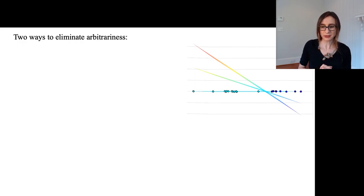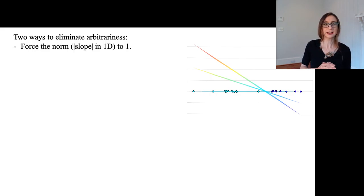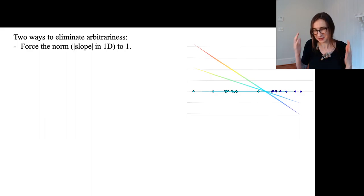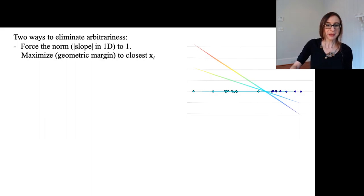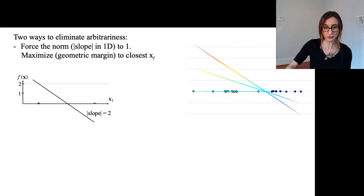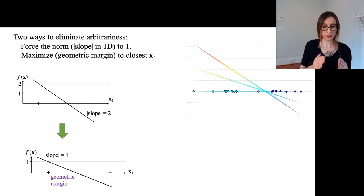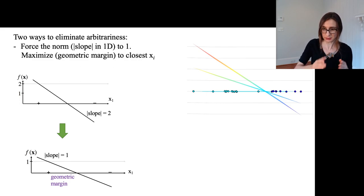There are two ways to eliminate this arbitrariness in the definition of the margin. The first way is to force the absolute slope to one — which is the same as forcing the norm in higher dimensions to be one — and then maximize the geometric margin to the closest data points. In other words, if you start with a function that has an absolute slope of two, normalize it, and then choose the function to have the largest geometric margin between the data point and the line.